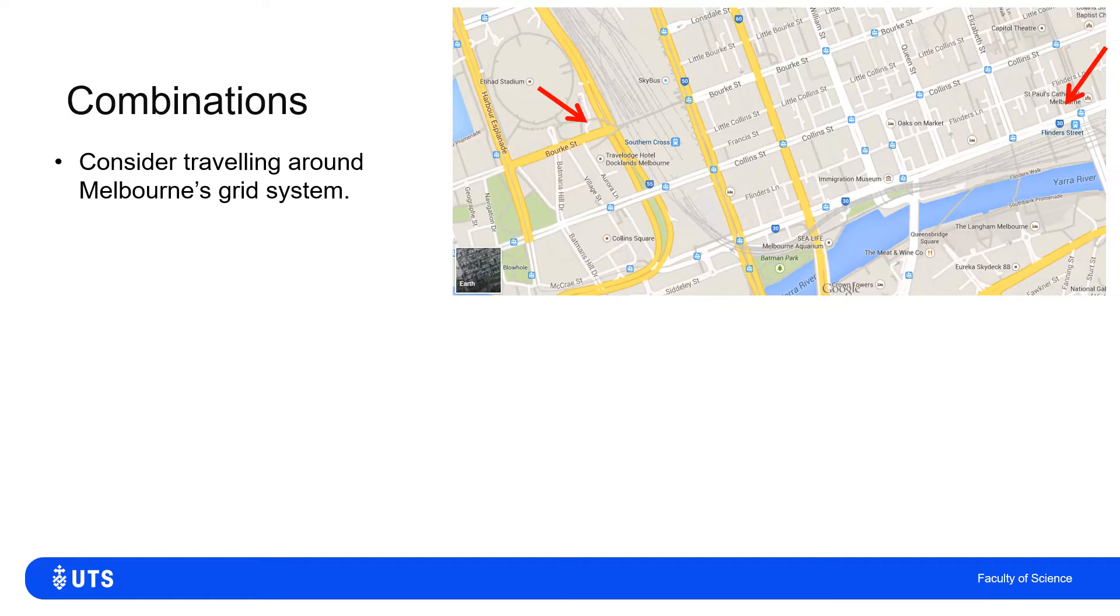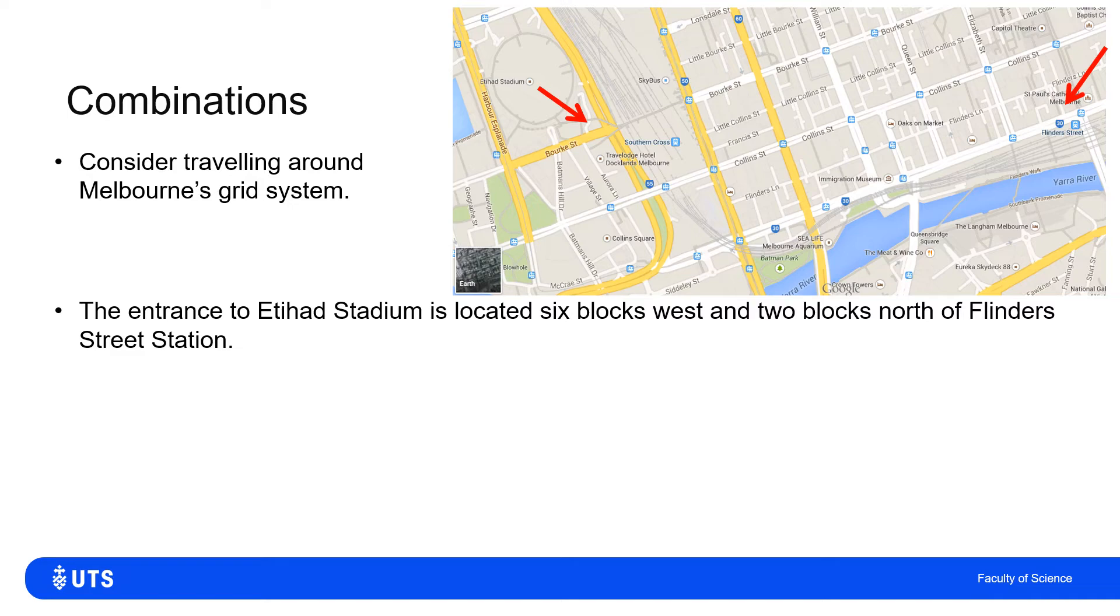We'll do this based on Melbourne's grid system. If we look at this map, I've marked two points. One's marked as Flinders Street Station and the other is Etihad Stadium. This screen cap's a little bit out of date, I think it's now Marvel Stadium. But anyway, the big stadium in Docklands in Melbourne. The entrance to Etihad Stadium is six blocks west and two blocks north of Flinders Street Station.